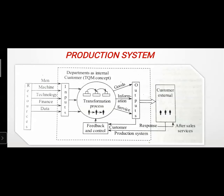From these five resources taken as input — men, machine, technology, finance, and data — you go through a transformation process. The outputs are: goods, information, and services. Goods are the manufactured products, information is what you learn from the process, and service is how you support customers in the market.